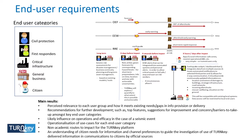These slides describe the first cycle of research carried out with five end-user categories: first responders, civil protection municipalities, general business and critical infrastructure, in six countries — Romania, Italy, Greece, Iceland, France and Netherlands. This research yielded a wealth of data which was analyzed to draw out use case scenarios, must-have versus nice-to-have features, and to identify additional suggestions and recommendations on what Turnkey may provide to meet existing requirements.